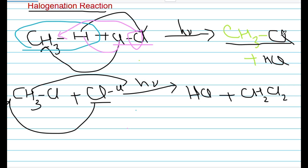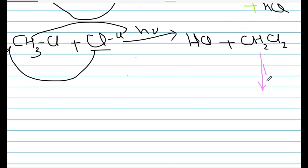It became CH3Cl. If I react this compound with one Cl2 again, then one chlorine replaces one hydrogen and it becomes CH2Cl2. And since there are still two hydrogen atoms, again diffused sunlight is added and one more chlorine molecule is added. One chlorine is added and one hydrogen is released, so it becomes CHCl3.